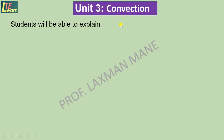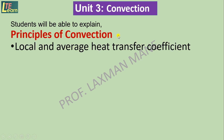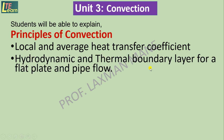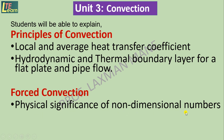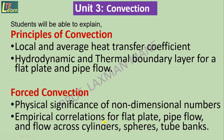Third unit: convection. In this unit you will be able to explain principles of convection. Local and average heat transfer coefficients will be studied, along with hydrodynamic and thermal boundary layer for a flat plate and pipe flow. There is the concept of forced convection and free convection. In forced convection, the physical significance of non-dimensional numbers and empirical correlations for geometries like flat plate, pipe flow, and flow across cylinders, spheres, and tube banks are covered.